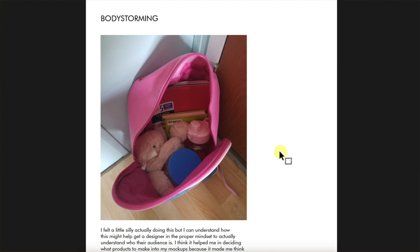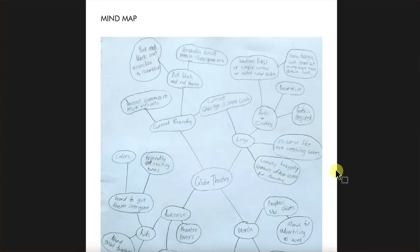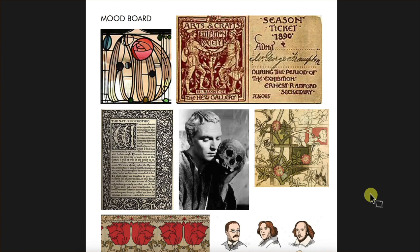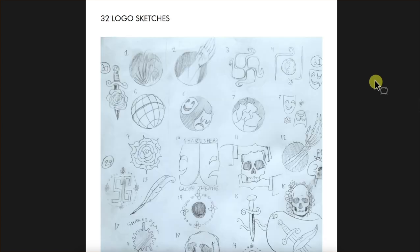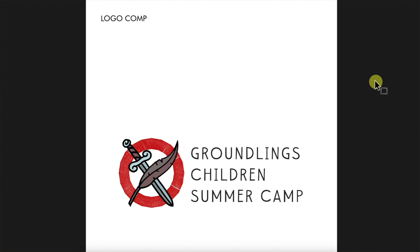I think you came up with great ideas here. I see good things — things my 12-year-old would take to camp. I liked in your mind map that you had things like friendly and exciting tones and some things from the Arts and Crafts movement like decorative and gothic inspired. I love seeing how you thought things out. This is a really good looking mood board — lots of variations. I do see this nice thick black stroke used in your logo as well as some awesome fonts. Here are your logo sketches, and here is your logo comp.